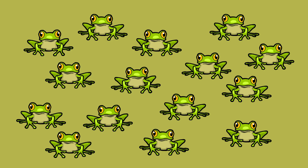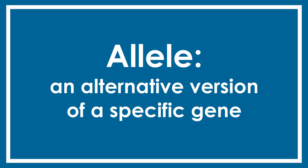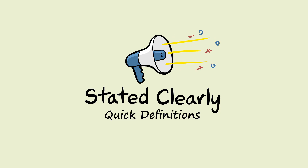When an allele dominates an entire population, we call this fixation. So there you have it: an allele is an alternative version of a specific gene. I'm John Perry, and that was a quick definition of an allele, stated clearly.